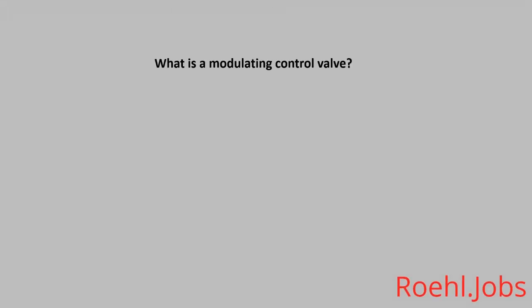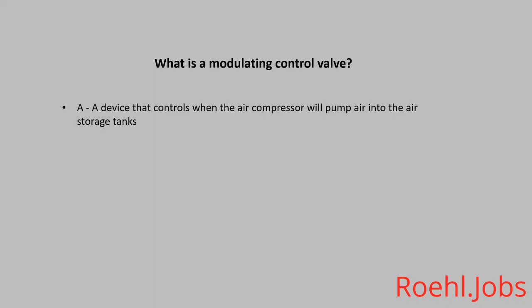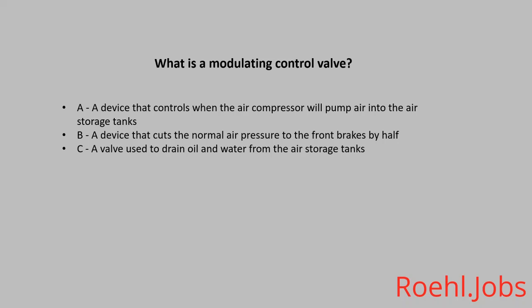What is a modulating control valve? A. A device that controls when the air compressor will pump air into the air storage tanks. B. A device that cuts the normal air pressure to the front brakes by half. C. A valve used to drain oil and water from the air storage tanks. D. A lever used to apply the spring brakes gradually. The answer: D. A lever used to apply the spring brakes gradually.